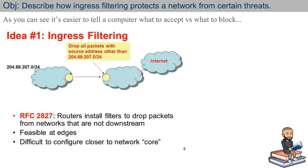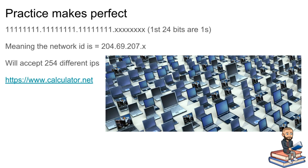So if I'm this number over here and I request a Facebook page to be sent not back here but to maybe another cloud or another IP network over here, if this router detects that, it'll just drop the request. I can't be in Colorado and say, 'Hey router, can you give me access to Sony PlayStation networks and send that back to California?' That router is going to say no — you're from Colorado, from a network called 204.69.207, and I'm not going to process anything that's not within the network you're coming from.